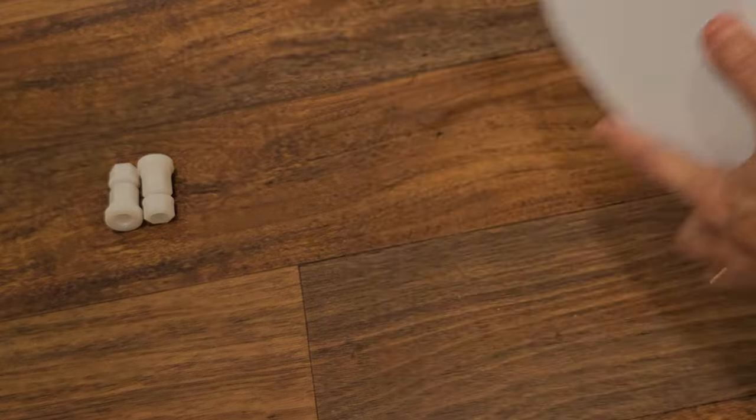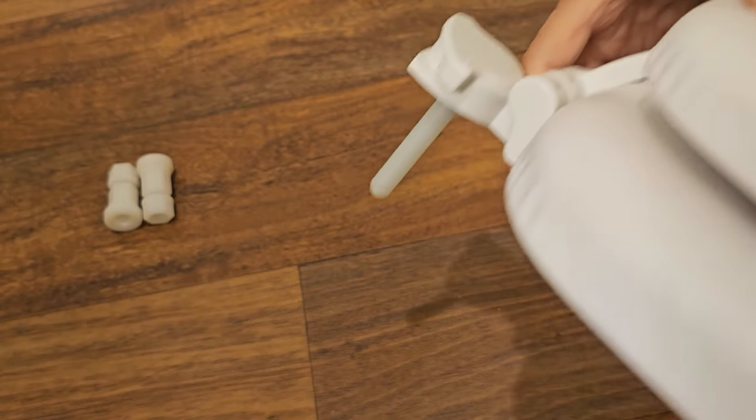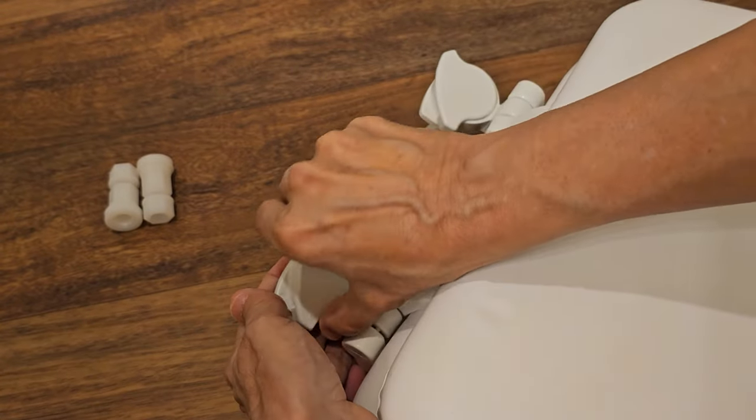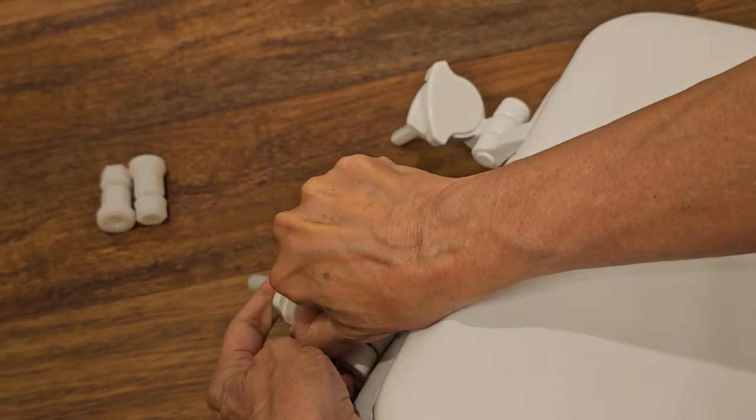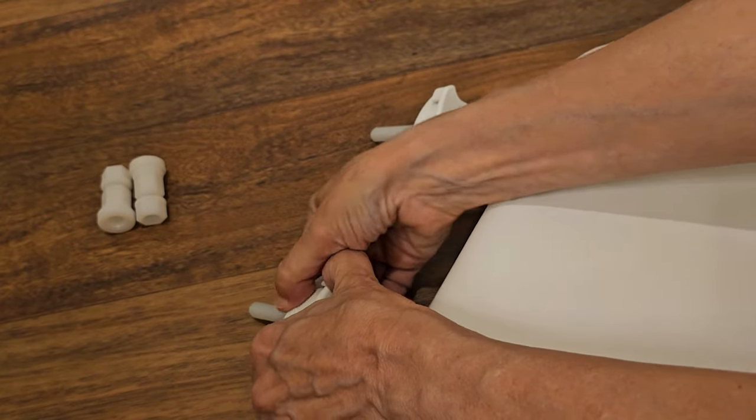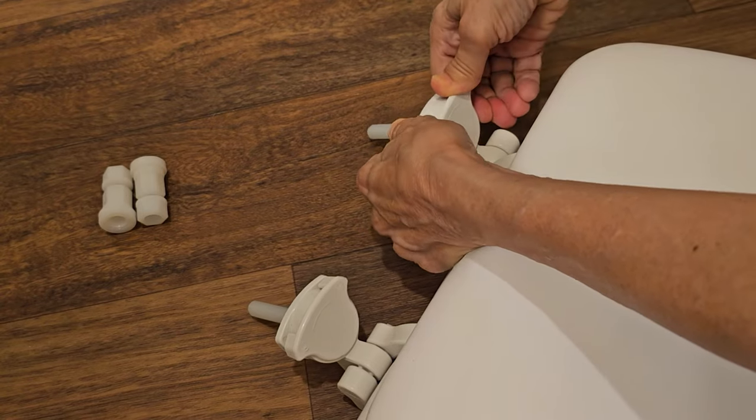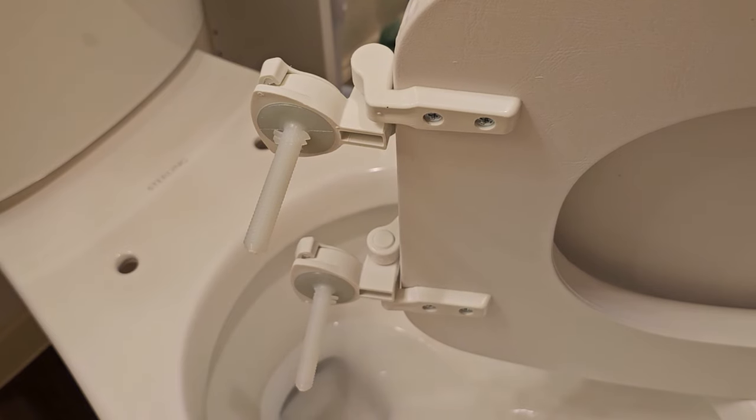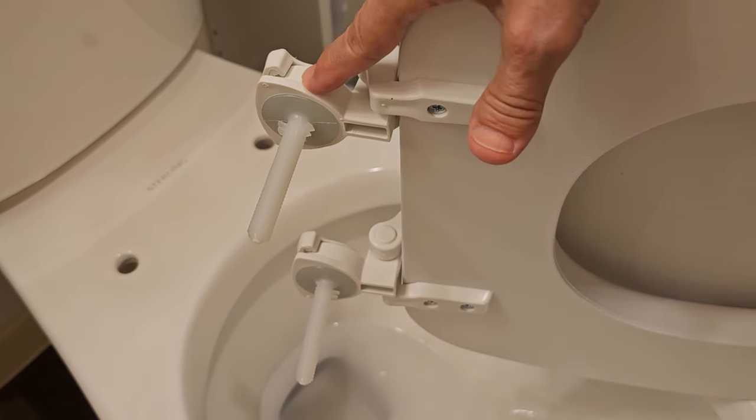Now turn it back over and turn it to the right to lock the cap in. So now the bolts are part of the hinge.